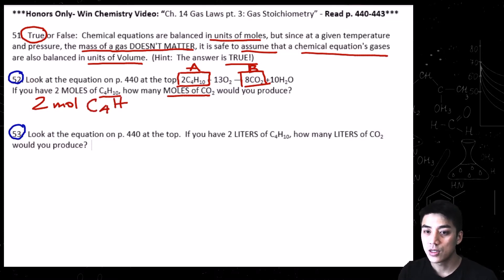So 2 moles of C4H10, times sign, draw a line. And because we're already in the mole step, you can just cut and paste. Make sure you review the Chapter 12 stoichiometry playlist if this doesn't make sense. This should be review. There's really nothing new here.